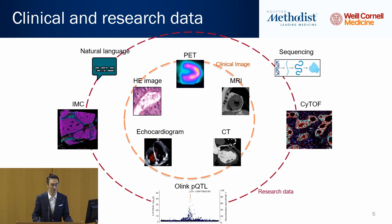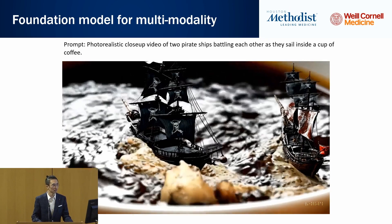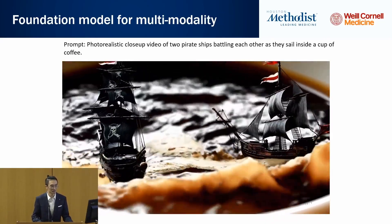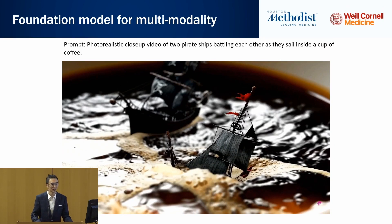Now we have multi-modality learning. For each type of data, we train a single-modality AI model and then bridge them together using a cross-modality learning mechanism. Here is an interesting example released by OpenAI — an algorithm named Sora — which can generate video based on a natural language description. For example, based on a description, they want to generate a boat in a coffee cup. This kind of data should never be in their training dataset, but given natural language input, they can generate a video. This is the power of cross-modality.